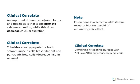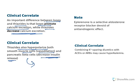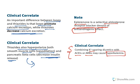Key clinical points: loop diuretics cause calcium excretion, whereas thiazides decrease calcium excretion. Thiazides also hyperpolarize smooth muscles, cause vasodilation, and decrease insulin release — so thiazides may cause a type of diabetes mellitus. Eplerenone is a selective aldosterone receptor blocker without anti-androgenic effects. Combining potassium-sparing diuretics with ACE inhibitors or ARBs will cause hyperkalemia.